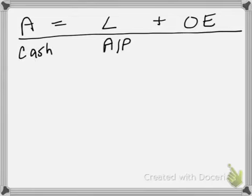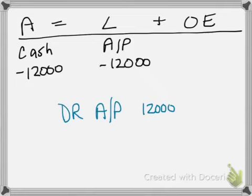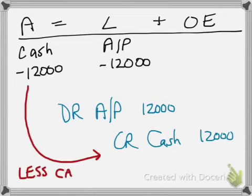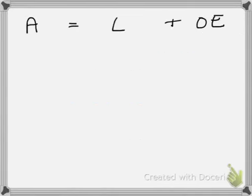Next, we paid twelve thousand dollars on account, so now we are paying off the obligation for the purchase of equipment in full. We're going to see a decrease of twelve thousand dollars in cash and a decrease to the liability account of twelve thousand dollars, so debit accounts payable twelve thousand and credit cash twelve thousand — less cash and less liability.